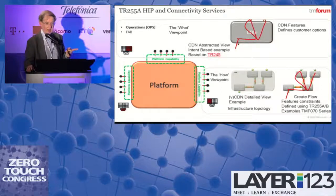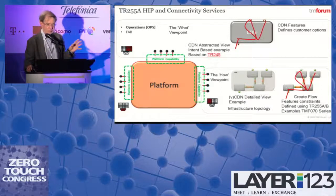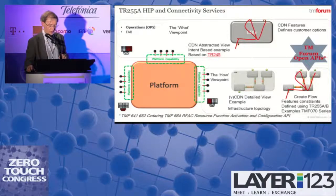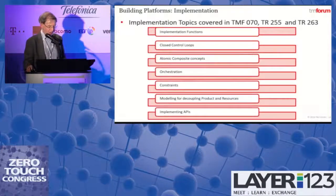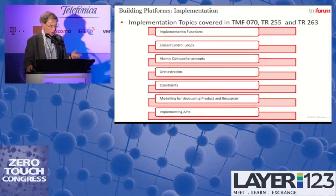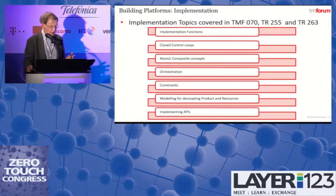That requires mapping between the CDN features and the constraints established from the operational 'how' viewpoint. We've defined these in documents TR255A and TR255B, with examples in the TMF 070 series. Basically, we need platforms, a simple abstraction model supporting three kinds of value streams, and we have quite a few APIs in place. Our documentation also covers implementation functions, closed control loops, atomic and composite concepts, orchestration, constraints modelling for decoupling products and resources, and implementing APIs.